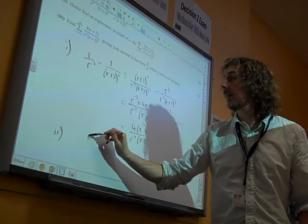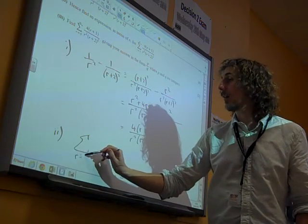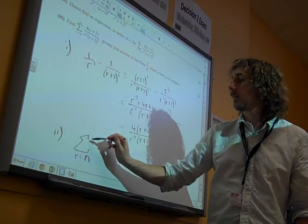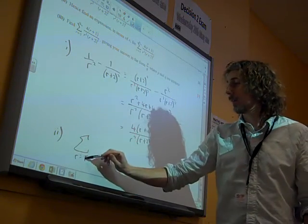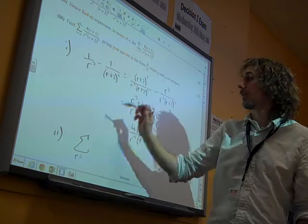So really the question is saying, find the sum as r goes from 1 to n. What am I doing there? 1 to n, sorry, I've got carried away and wrote it both at once.